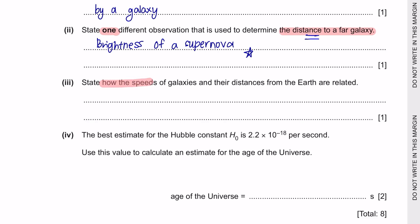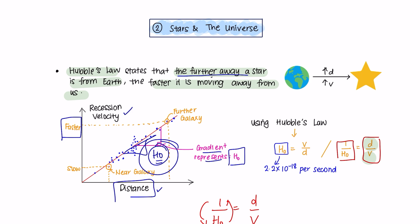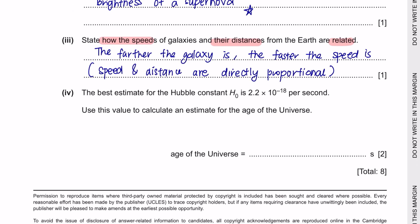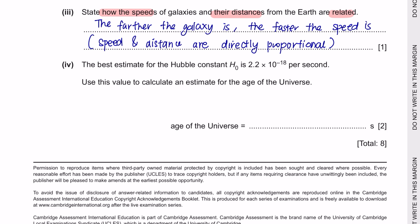Next part 3: State how the speeds of galaxies and their distances from the Earth are related. According to Hubble's law, the further away a galaxy is from Earth, the faster it is moving away from Earth. In simple words, speed and distance are directly proportional. Next part 4: The best estimate for the Hubble constant is 2.2 × 10⁻¹⁸ per second. Use this value to calculate an estimate for the age of the universe. The age of the universe is 1 over the Hubble constant: 1 ÷ (2.2 × 10⁻¹⁸) = 4.5 × 10¹⁷ seconds.